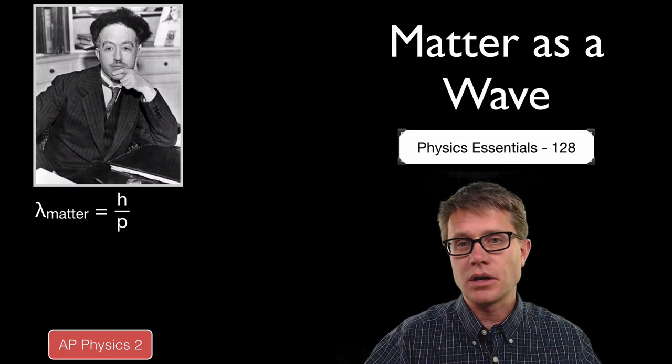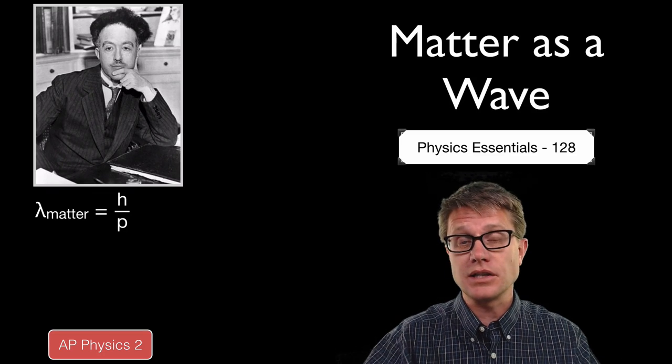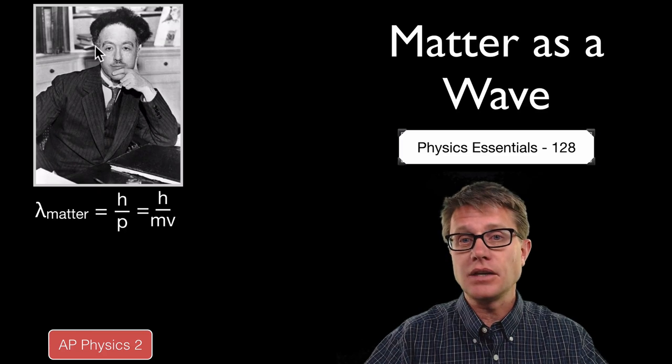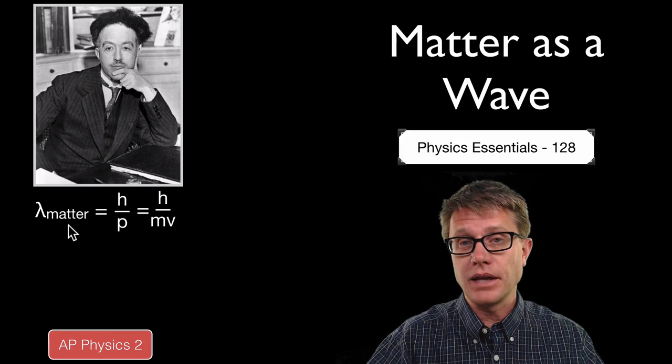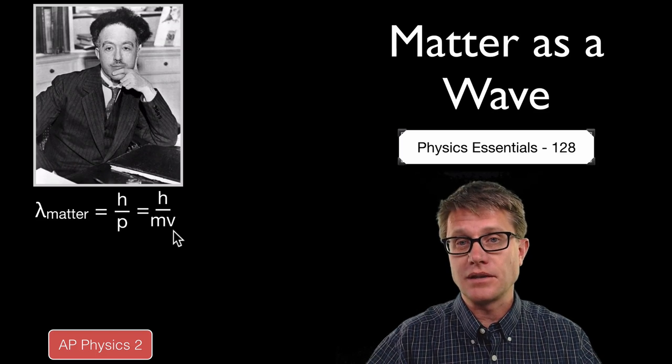In the last video I showed how the work of Louis de Broglie suggested that matter might be made of waves, just like light is made of particles. And he even came up with de Broglie's wavelength, which is equal to Planck's constant divided by momentum, which is mass times velocity.